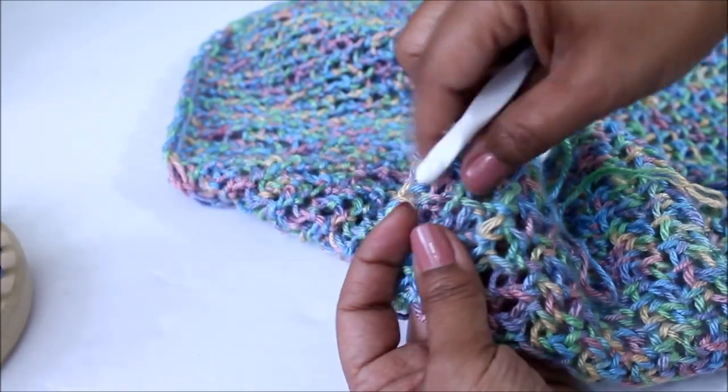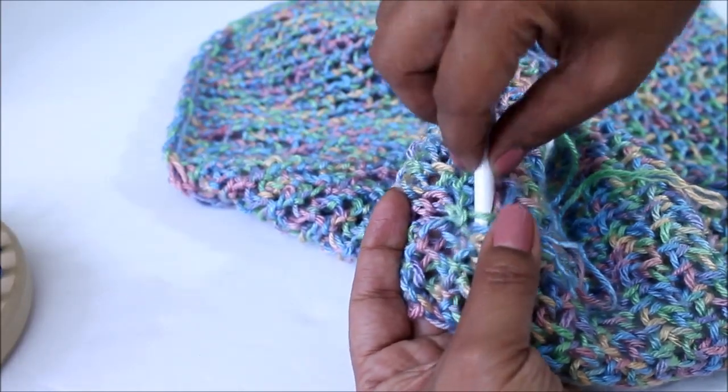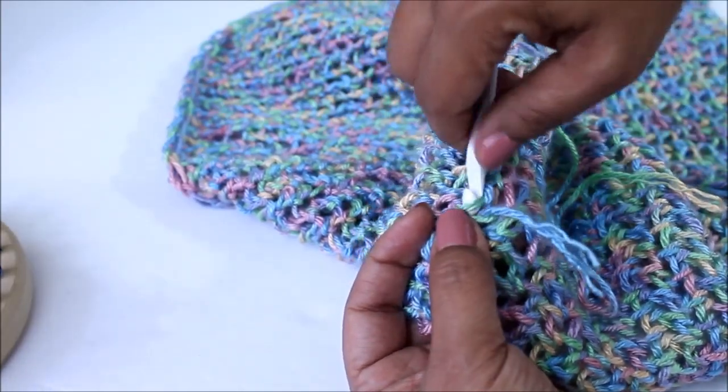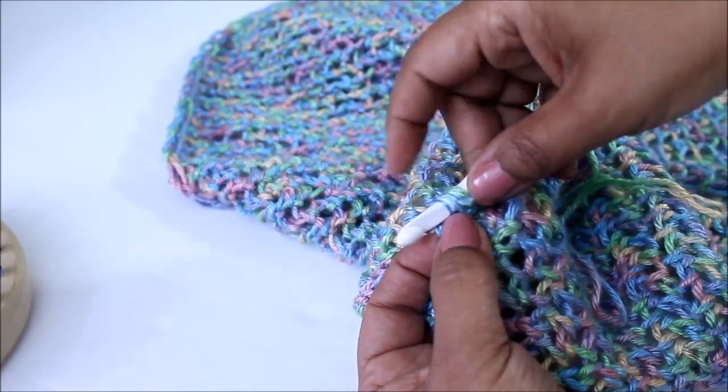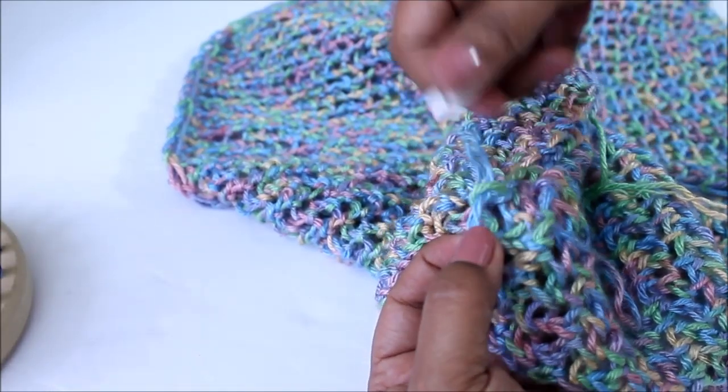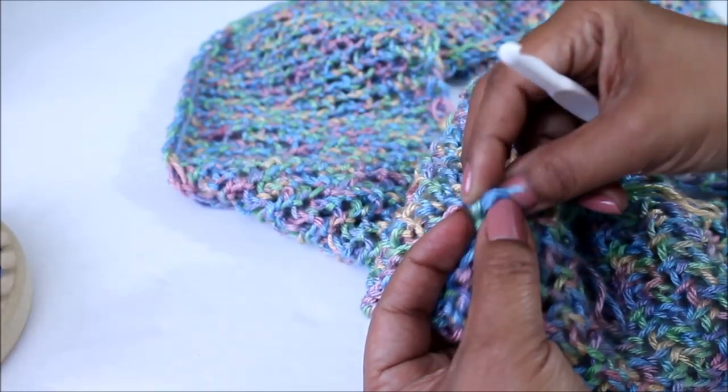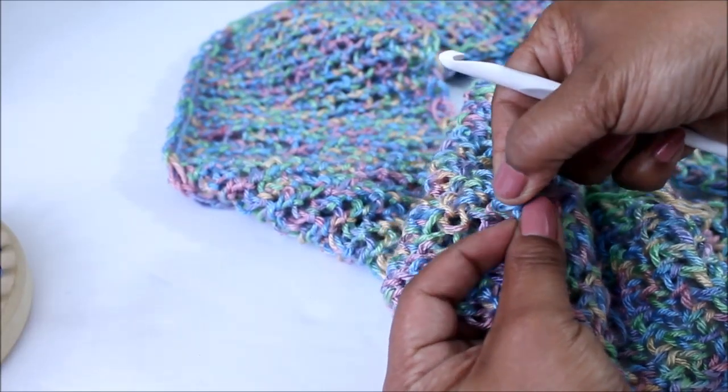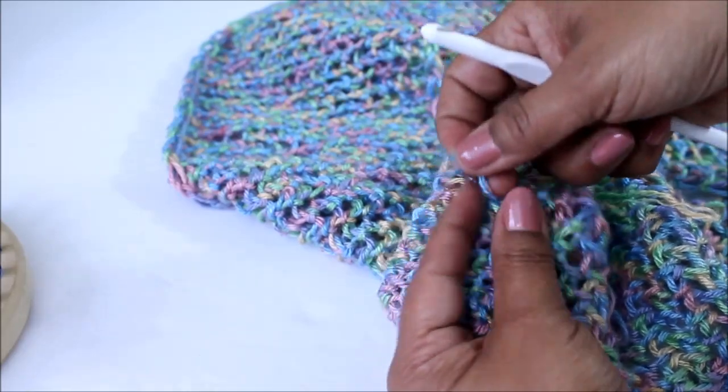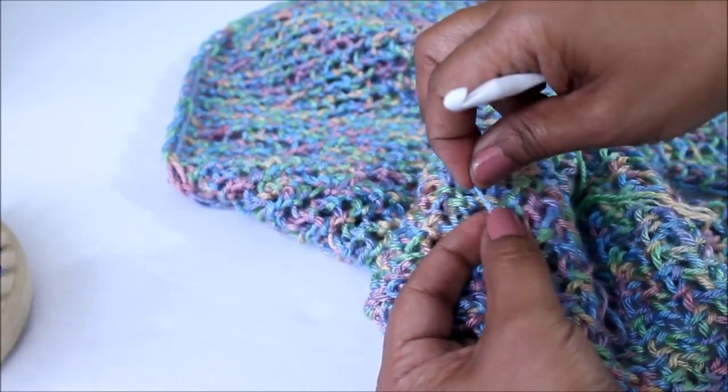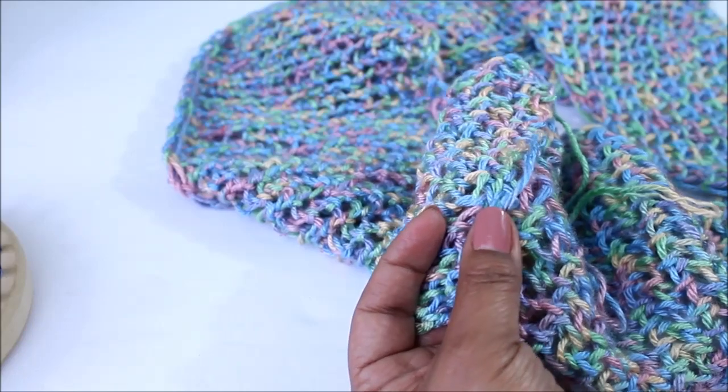And then when you feel like it's hitting enough, you can go ahead with that end and make a knot in order to secure it so that it doesn't come off when you wash it or something. So that's why you make a little knot, nothing too major and then if you feel like you have excess yarn, you get your scissors and you can cut off that little bit of yarn.